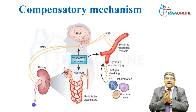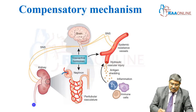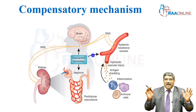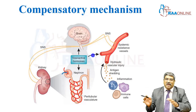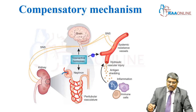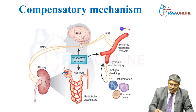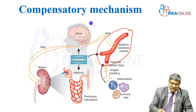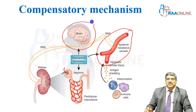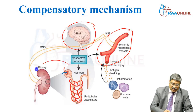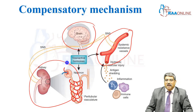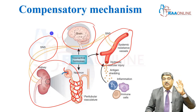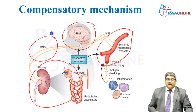Now, coming to blood pressure regulation. Anything which affects the heart rate, stroke volume, and systemic vascular resistance will alter your blood pressure. The main compensatory mechanisms come from the vascular system, which is responsible for vascular resistance; the brain, which secretes vasopressin; the kidney, which secretes renin; and the sympathetic nervous system, which plays a very big role in controlling blood pressure.